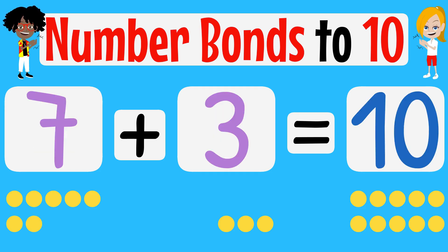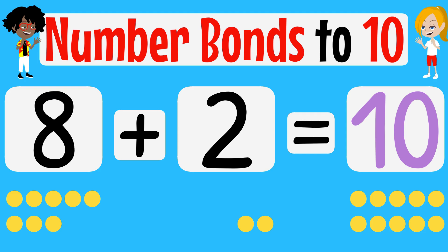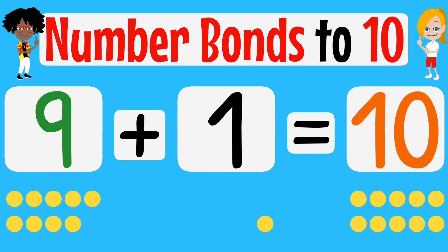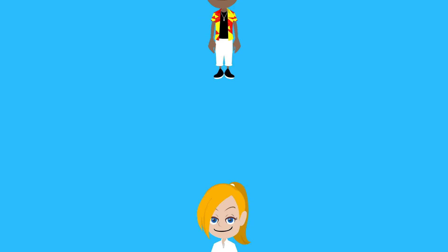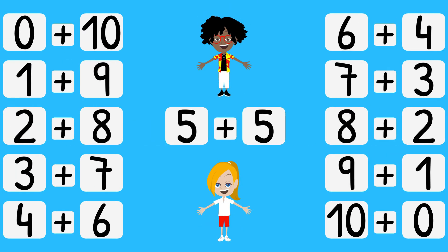7 and 3 equals 10. 8 and 2 equals 10. 9 and 1 equals 10. 10 and 0 equals 10. Let's sing our number bonds again!